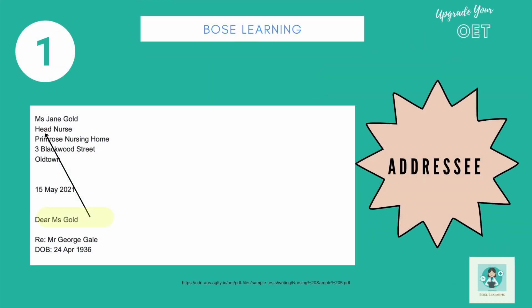The other place you need to write to the addressee is in the dear line — so, Dear Ms Gold. Here you just need to write their title and their surname. Don't worry about their first name; it's not important. Whatever you do, please don't write 'Dear Ms Jane' because that's not what a formal letter looks like. We always use Dear, Title — Ms, Mr, Mrs, Doctor — and their family name.